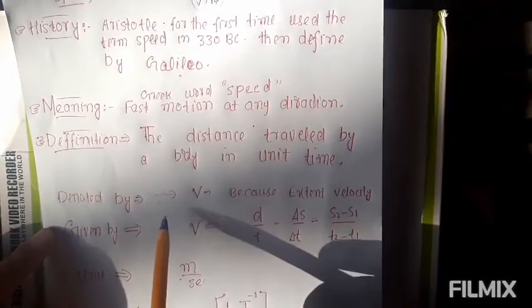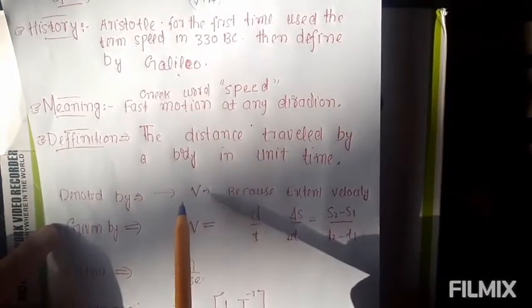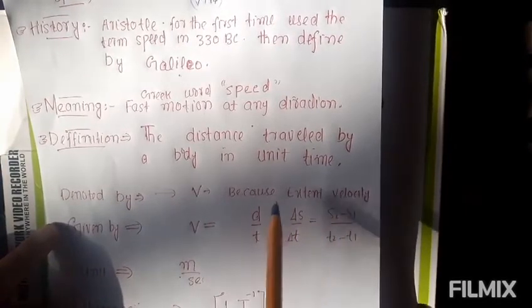Denoted by simple denotation of speed is V. Because why V denote speed by V? Because extent to velocity.